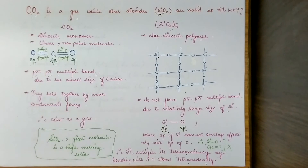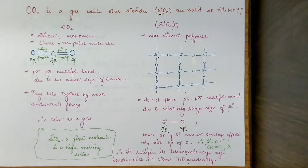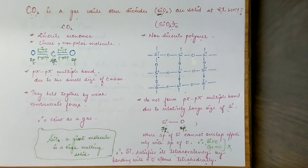In contrast, the discrete units of carbon dioxide are held together by only weak van der Waals forces, so carbon dioxide remains in the gaseous form. So that is the full explanation of why carbon dioxide is a gas and silicon dioxide is a solid — they may appear to be similar molecules but they are very different in nature.